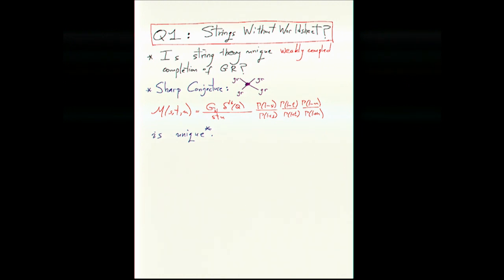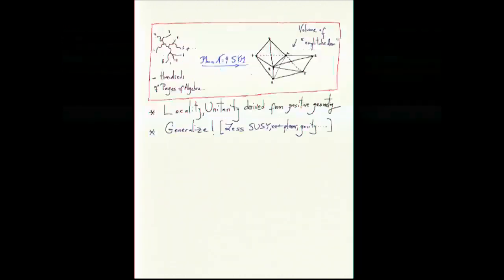Right now the only way we know of showing even that this is unitary, that the residues are positive is through all the usual indirect arguments involving world sheet BRST, supersymmetry and string theory and so on. But there might be another way of arriving at this answer and that other way might be related to a less world sheet centered way of thinking about what string scattering amplitudes are.